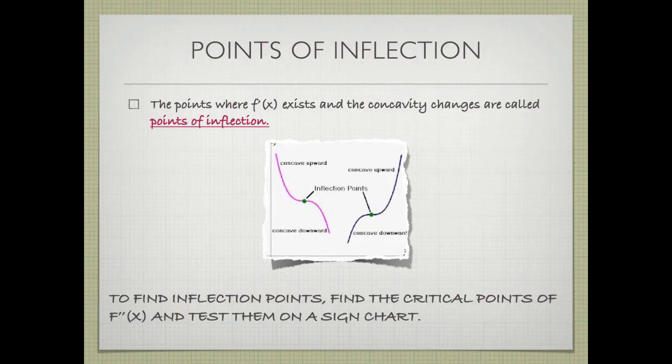The next topic is points of inflection. The points where f'(x) exists and the concavity changes are called points of inflection. On our last example, we had the critical point 2/3 where our concavity went from negative to positive — that was a point of inflection. To find inflection points, we find the critical points of f''(x) and test them on a sign chart. If the sign changes and our concavity changes, we have an inflection point.